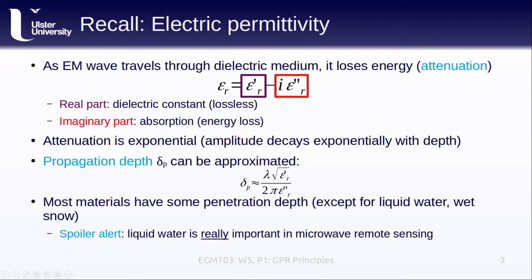In Week 3, we discussed the principles of microwave remote sensing. One of the topics that we covered in those lessons is the electric permittivity, specifically how the electric permittivity determines how electromagnetic radiation interacts with a particular material, including how well it is able to penetrate into that material.